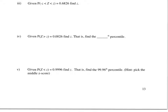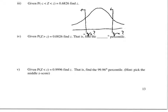Let's finish the problems on page 13. We want to find the Z values, the Z scores, where 68.26% of the observations appear to fall between. So we want this area, or we're given this area, and we want to find these Z scores.